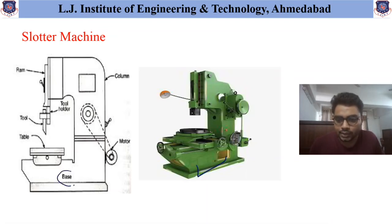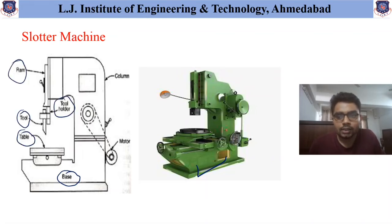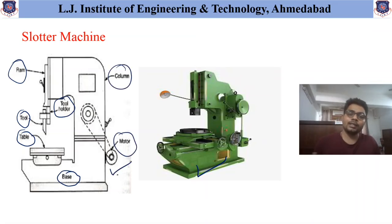The first part is the base, then the table, then the tool, tool holder, ram, column, and motor — which is used to finally provide the operating movement to this machine.